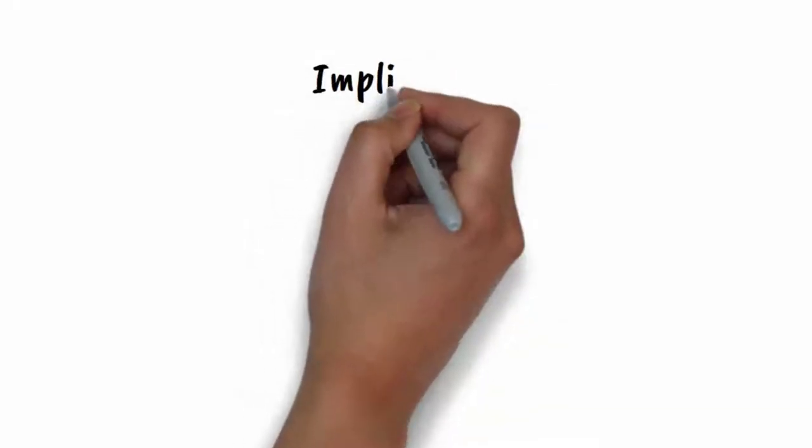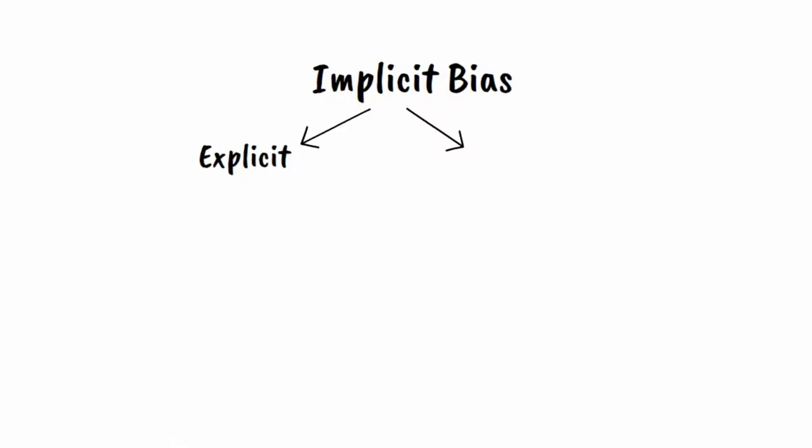Implicit bias. There are two types of bias: explicit and implicit. Explicit bias is the bias you are aware of, and implicit bias is unconscious bias.